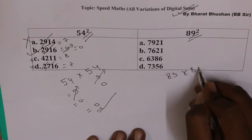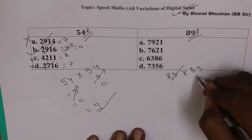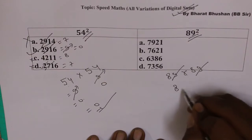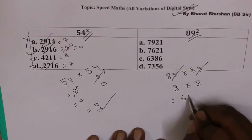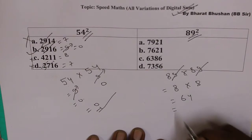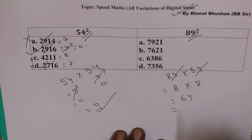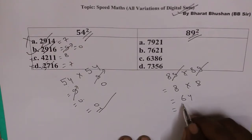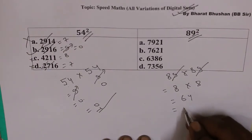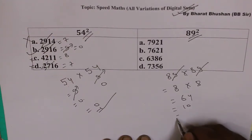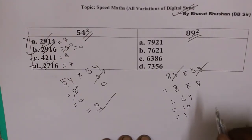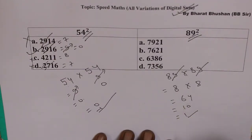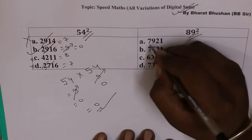Similarly, let's find 89 square. 89 into 89 — we eliminate 9, so 9 eliminate kar diya. Remaining we have 8. 8 into 8 is 64. Whenever we have more than one digit, we sum the digits: 6 plus 4 is 10. Again we have two digits, so again sum them: 1 plus 0 is 1. So 89 ka square ka digital sum is 1. We need to check which options have a digital sum of 1.